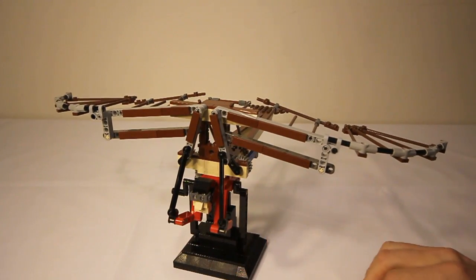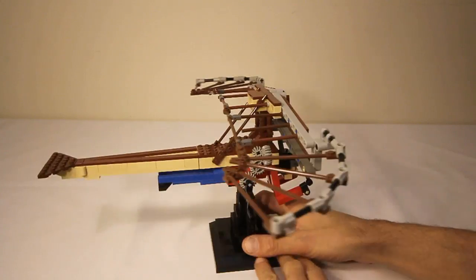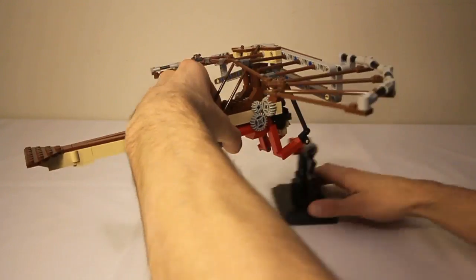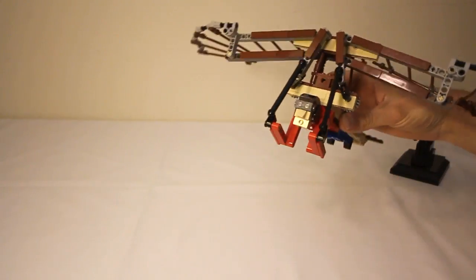You can remove the flying machine and the pilot from the stand quite easily. You can just pop them off, and that way you can fly him around through the air.